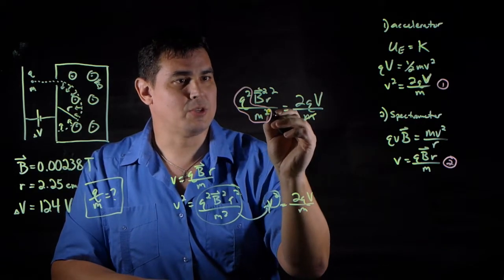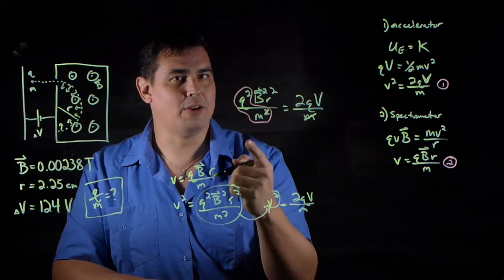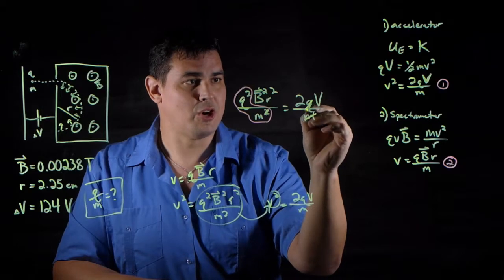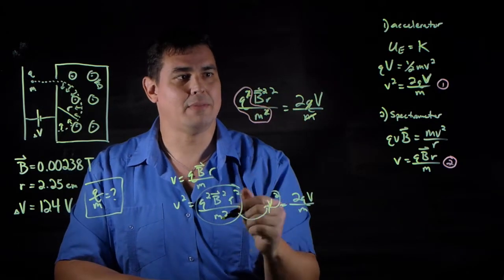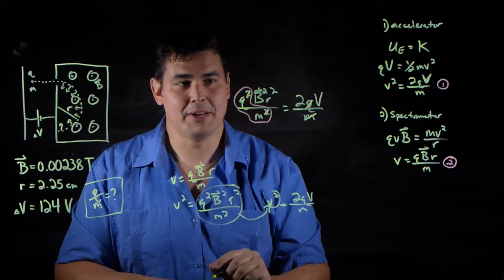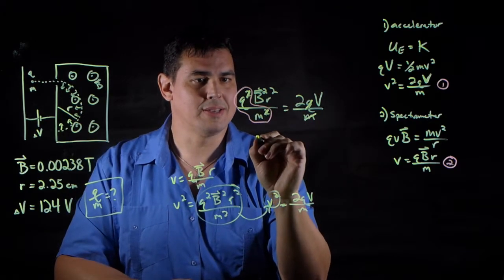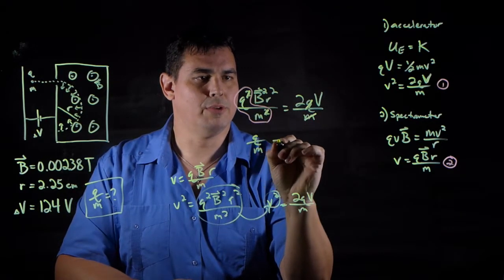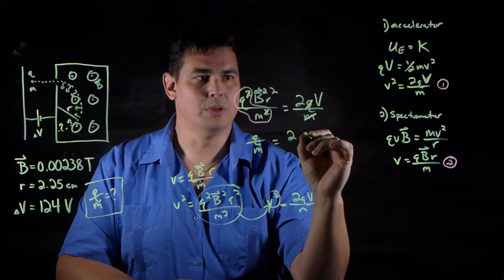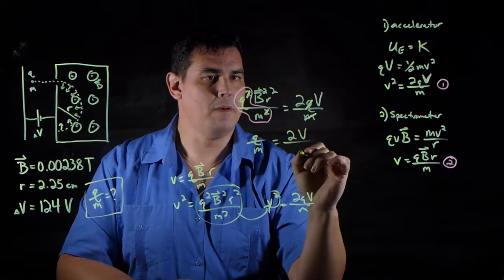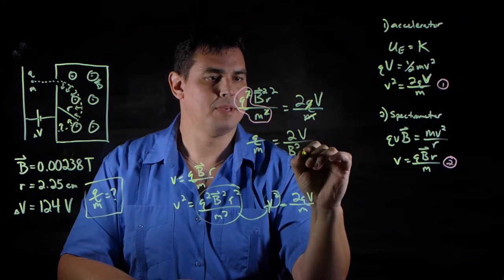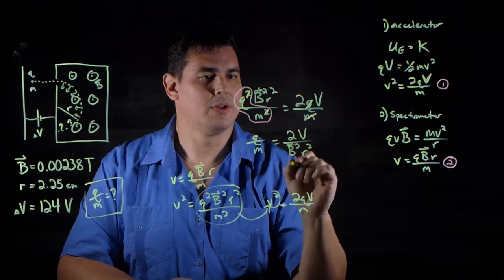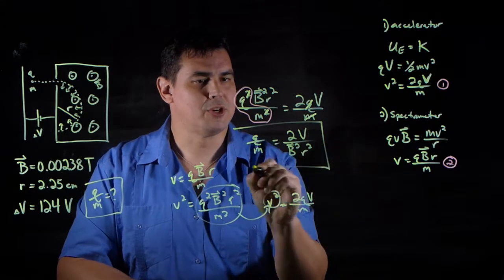This mass is going to cancel one of these, because if I multiply it over, it'll be in the numerator. And this charge is going to cancel out that, because if I divide it over, it'll be in the denominator. So all I got to do is move these two over. So I can say that q over m equals 2V over B squared r squared. There's my charge to mass ratio.